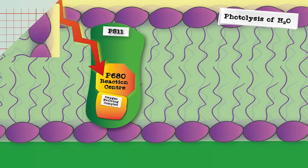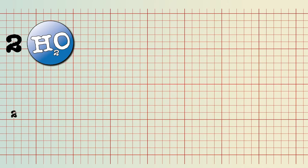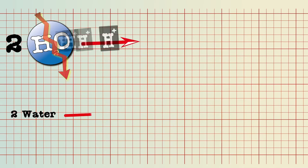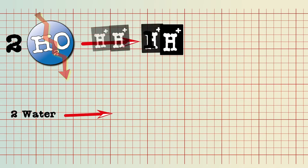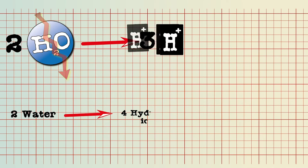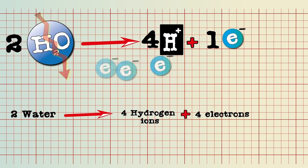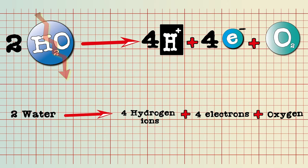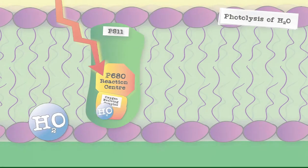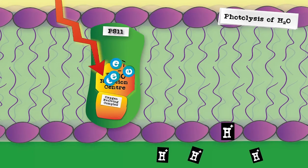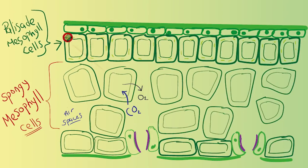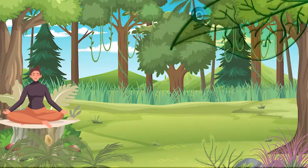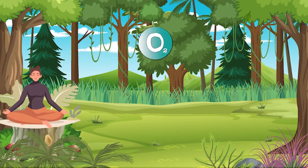Specifically, the equation is two water molecules, which are then split, to give us four hydrogen ions, four protons, plus four electrons, plus one molecule of oxygen. The oxygen is released as a gas, which of course is a very important by-product for us humans.